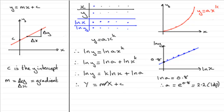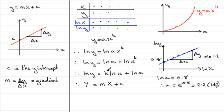What about k? Well, k corresponds to m, the gradient of this line. To work out the gradient, find two points on the line, draw a triangle, work out the change in y divided by the change in x. Suppose that value turns out to be 1.2 — the gradient m equals 1.2, which means our constant k equals 1.2. So the relationship is y equals 2.2 times x to the power 1.2.